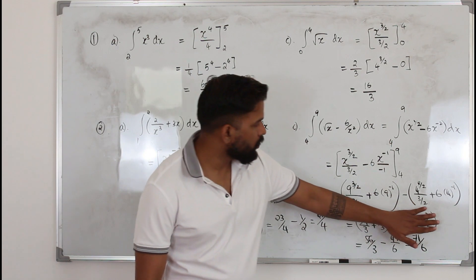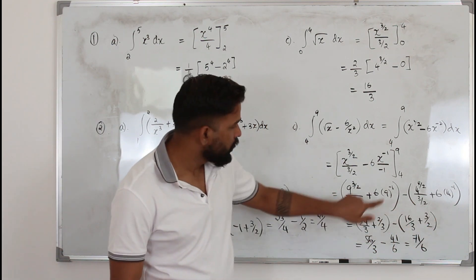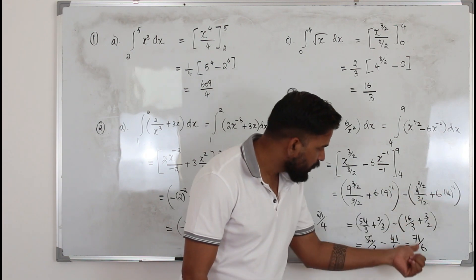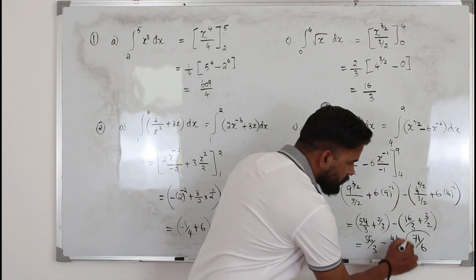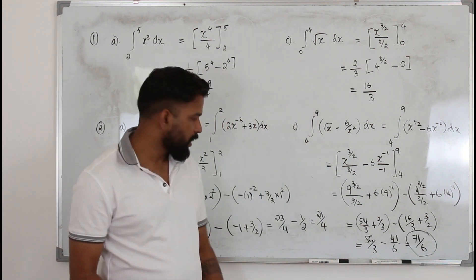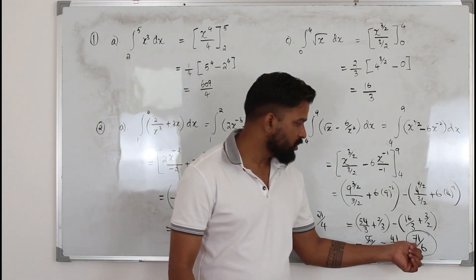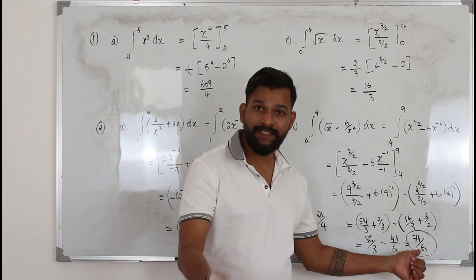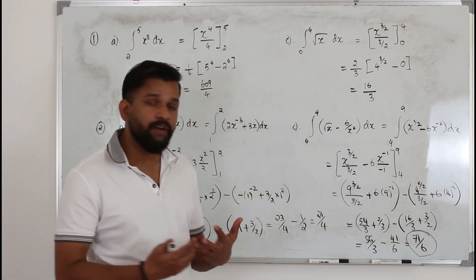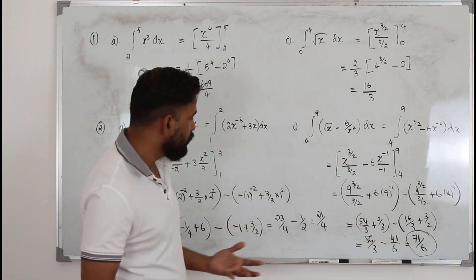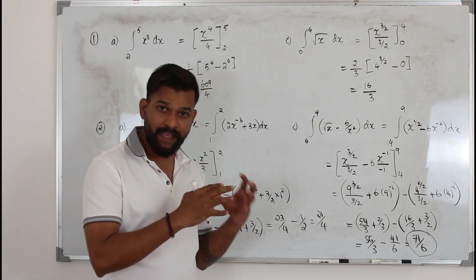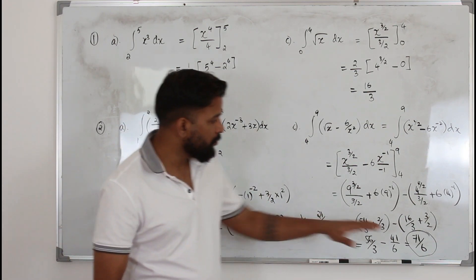You don't need to show all these steps. Just show the substitution of upper limit minus lower limit, and then straight away write your answer: 71 over 6. One of my students asked whether to change this improper fraction to a mixed fraction — you don't need to do that. You can just keep it as a fraction. You don't need to change it to a decimal either, because in Pearson and Excel, mostly they want the answer in exact form.